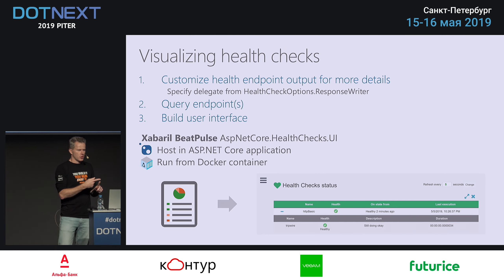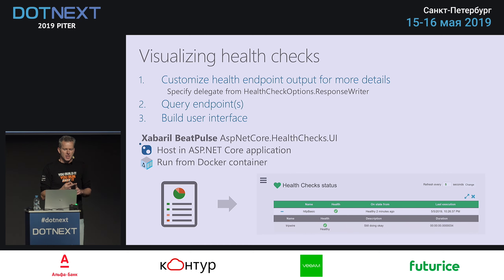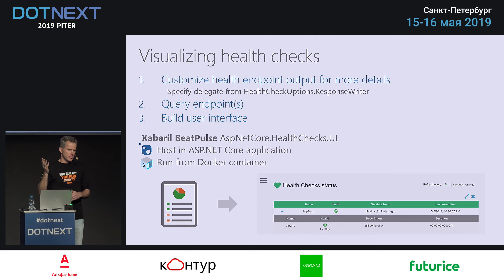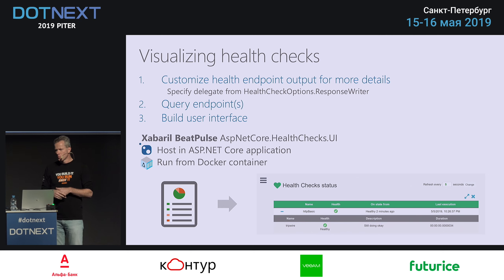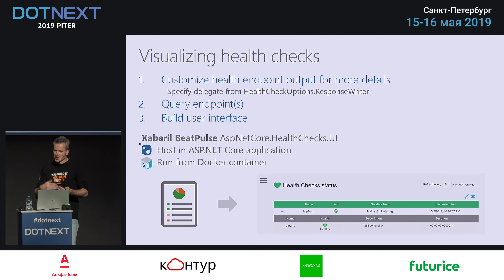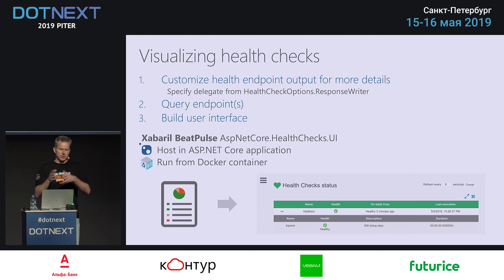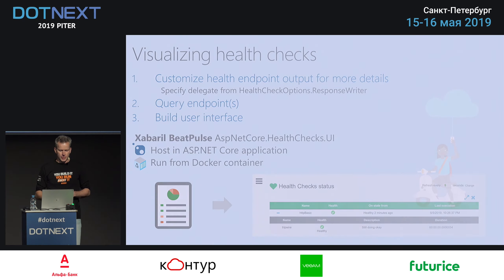Some options include changing the reported status code — usually 200 OK for healthy and degraded, 503 for unhealthy — but you can change degraded to also return a 503. You can allow or disallow client-side caching. You can change the way responses are written, using a custom response writer to get the entire report. There's also the predicate for filtering health checks, which is useful for readiness and liveliness endpoints. The team also recommends registering health checks as singletons, and you would do that with AddSingleton.